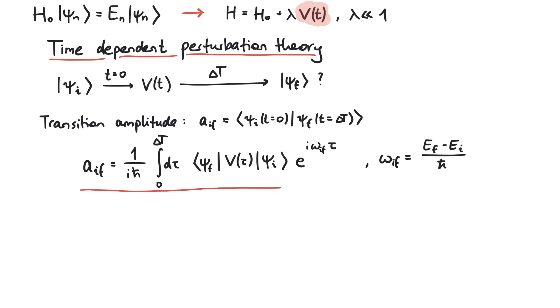After calculating the transition amplitude, we get the transition probability by taking the absolute square of the amplitude.